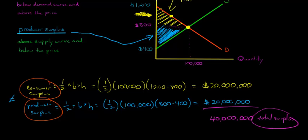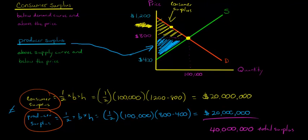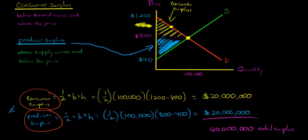Why do we care what the surplus is? Because we can think about things like a tariff or other government actions — a price ceiling, for example — and ask how they affect the surplus. If some government action takes away some of that surplus, we can see that we've lost value as a society. We can also think about who are the winners and losers of a policy: are consumers paying more, are producers losing? We'll talk about all of that in the videos to come.